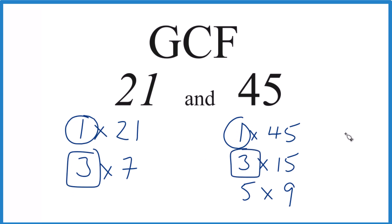So in answer to our question, when we look for the GCF for 21 and 45, it's 3.